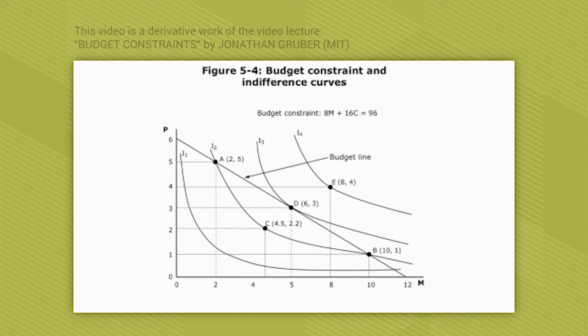And what we see is that the best you can do is to choose point D. Point D with six movies and three pizzas. Okay, that should be P on the y-axis, not C. It should be movies on the x-axis and pizzas on the y-axis. It should be P on the y-axis. The best you can do is to choose at point D. Now to see that, and that gives utility, what's the value of your utility at point D?